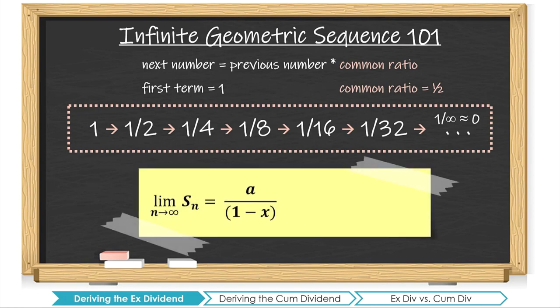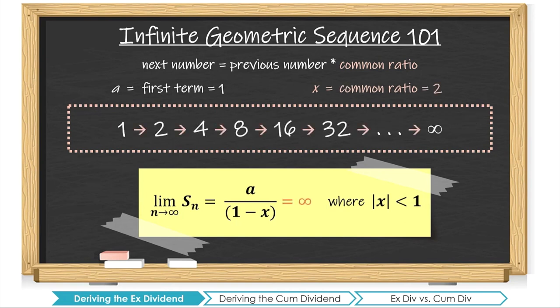The sum of an infinite geometric series equals A — the first term — divided by (1 minus x), where x is the common ratio. The sum can only be found if the absolute value of the common ratio is less than 1. Within this range, each term gets smaller and smaller approaching 0, and the sum converges to a definite number. If the common ratio were 2, the series would grow indefinitely and the sum would be infinite. If the concept of geometric series is fuzzy, there are resources online, but let's use this formula to derive the ex-dividend and cum-dividend formulas.